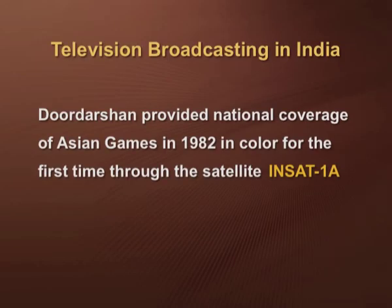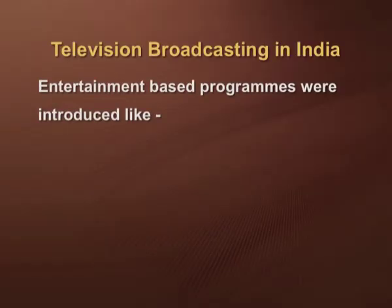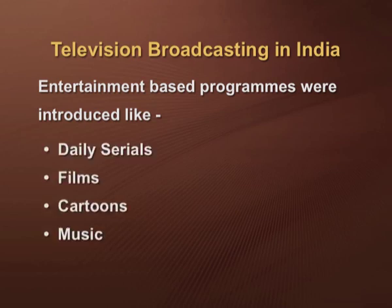A major turning point in the history of Indian TV was the introduction of color telecast. Doordarshan provided national coverage of the Asian Games in 1982 in color for the first time, through the satellite INSAT-1A. This changed the world of TV viewing in India forever. It resulted in a large number of sponsors coming to advertise on TV. With them, the target audience also changed — it became more middle-class oriented, attempting to cater to their choice rather than being confined to educational and farming-based programs. The content and focus of programs shifted more towards entertainment like daily serials, films, cartoons, music and sports.